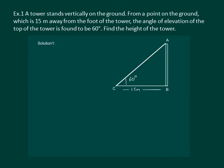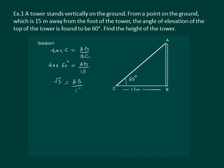Now clearly, we can see that this is a right triangle, and we can use one of our trigonometric ratios. We have the adjacent side and we have to find the opposite side. So clearly, we can use tan of C, which will be AB by BC — that is, tan 60° equals AB by 15. Since tan 60° is equal to root 3, it equals AB by 15. This gives AB equal to 15 root 3 meters. In other words, the height of the tower is 15√3 metres.